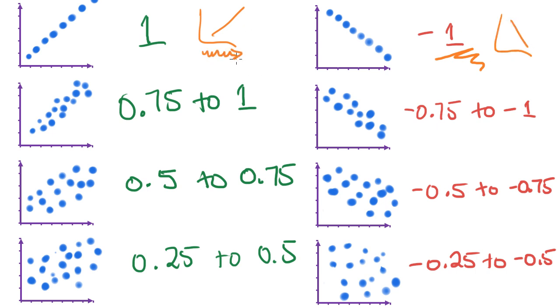So as independent values increase, the dependent values increase as well. Or as independent values increase, dependent values decrease. Both are a perfect correlation. It's just that we get to find out which direction we're going in. So as you can see, an r value is always going to be between negative 1 and positive 1.